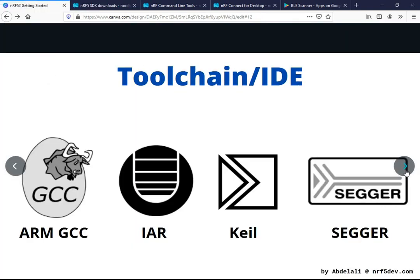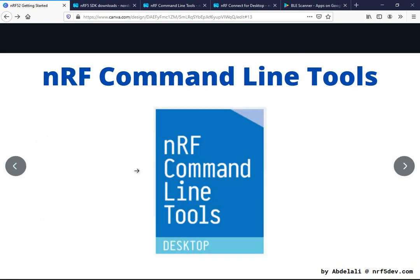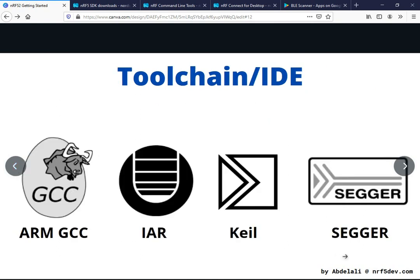The next software tool you need is a toolchain IDE. The latest version of the nRF5 SDK supports four toolchains: ARMGCC, IAR, KEIL, and SEGGER. It is recommended to use the SEGGER toolchain, unless you're already using another toolchain like KEIL with an IP license, IAR, or you're very familiar with ARMGCC. The good thing about SEGGER is that they offer a free commercial license just for use with Nordic products, so you can use this toolchain for free for commercial use.